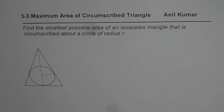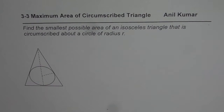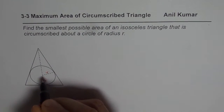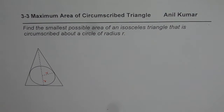I'm Anil Kumar and here is a test question for you. Find the smallest possible area of an isosceles triangle that is circumscribed about a circle of radius R. R is the radius of the circle and you need to find the smallest possible area of this triangle.